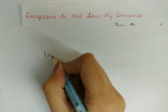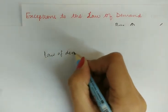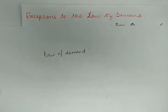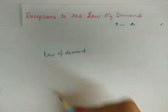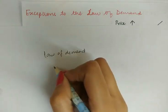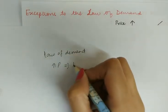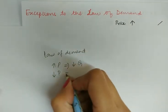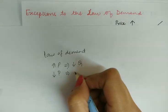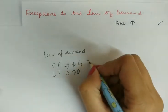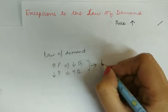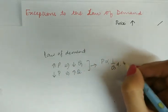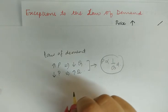Before moving on to the exceptions of the law of demand, let us look at the law of demand. As we have studied in lecture 1, the law of demand states that other things being the same, the increase in the price of the commodity leads to contraction of demand, and decrease in the price of the commodity leads to expansion of demand. This means that price and quantity demanded are inversely related to each other.